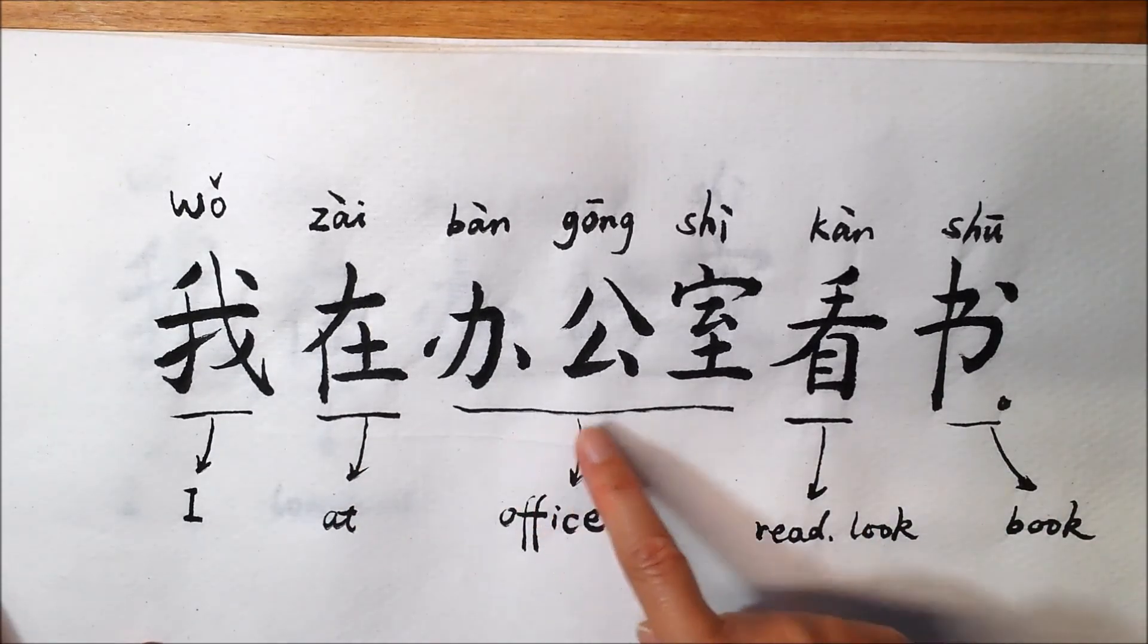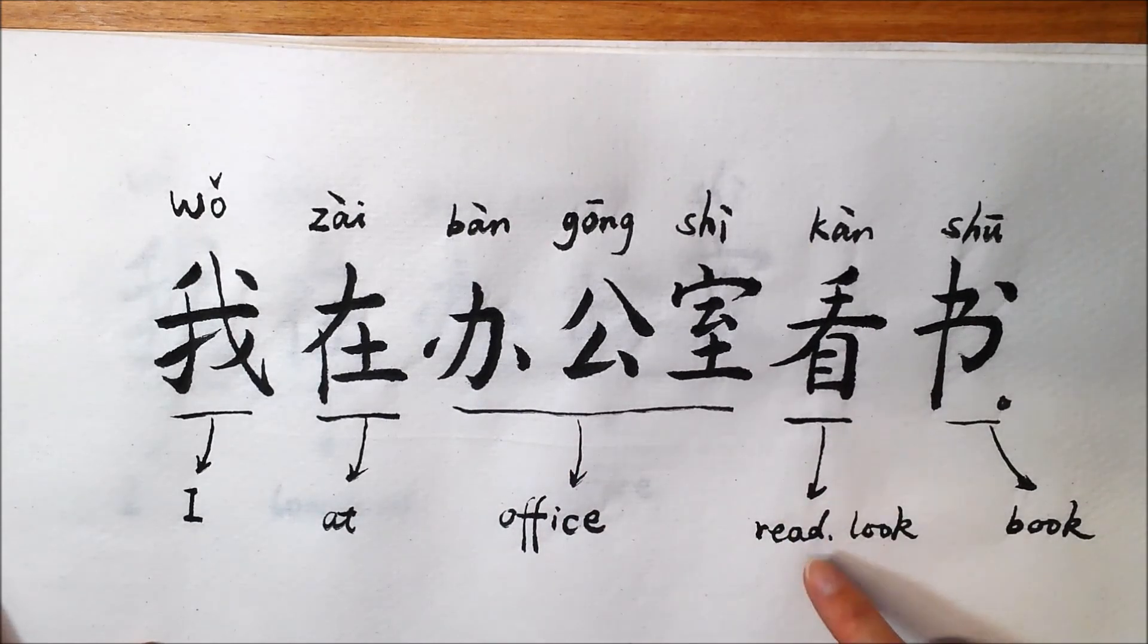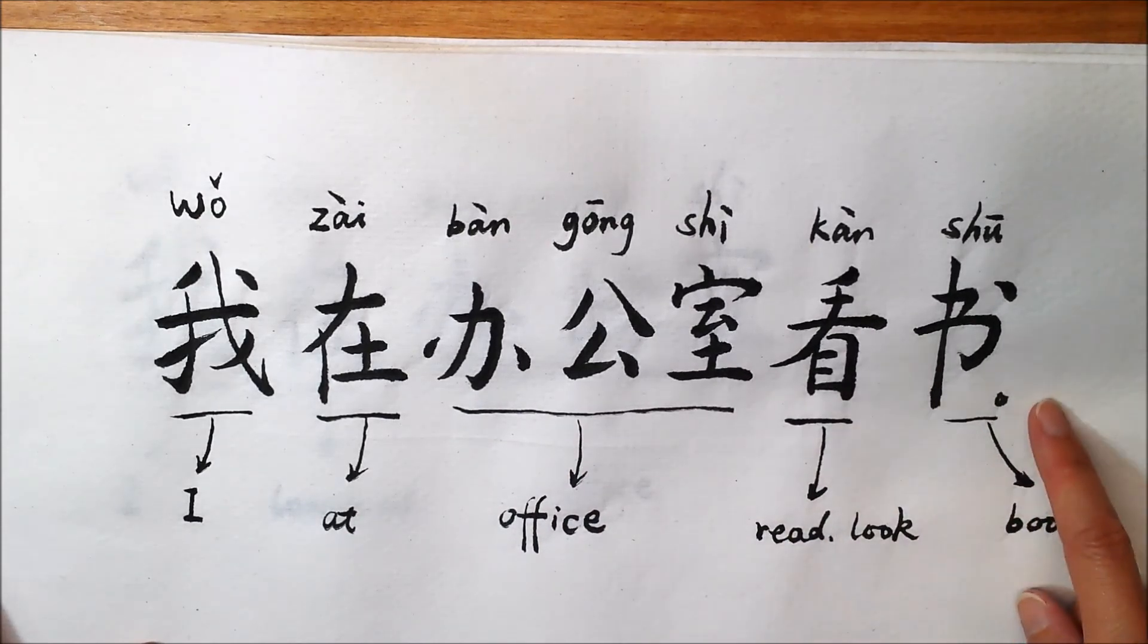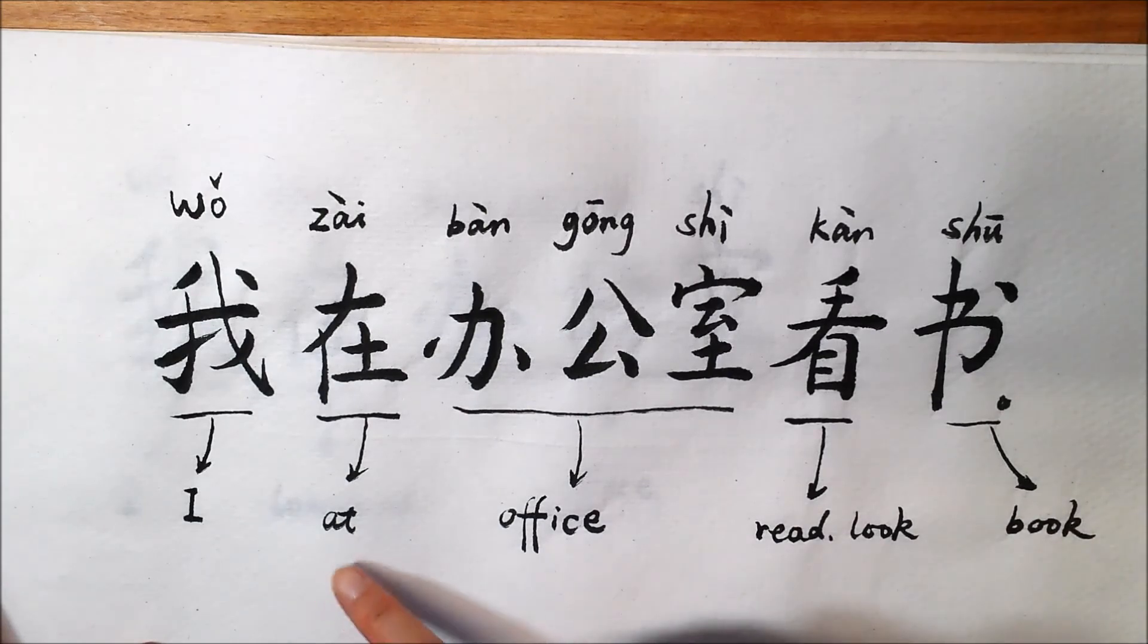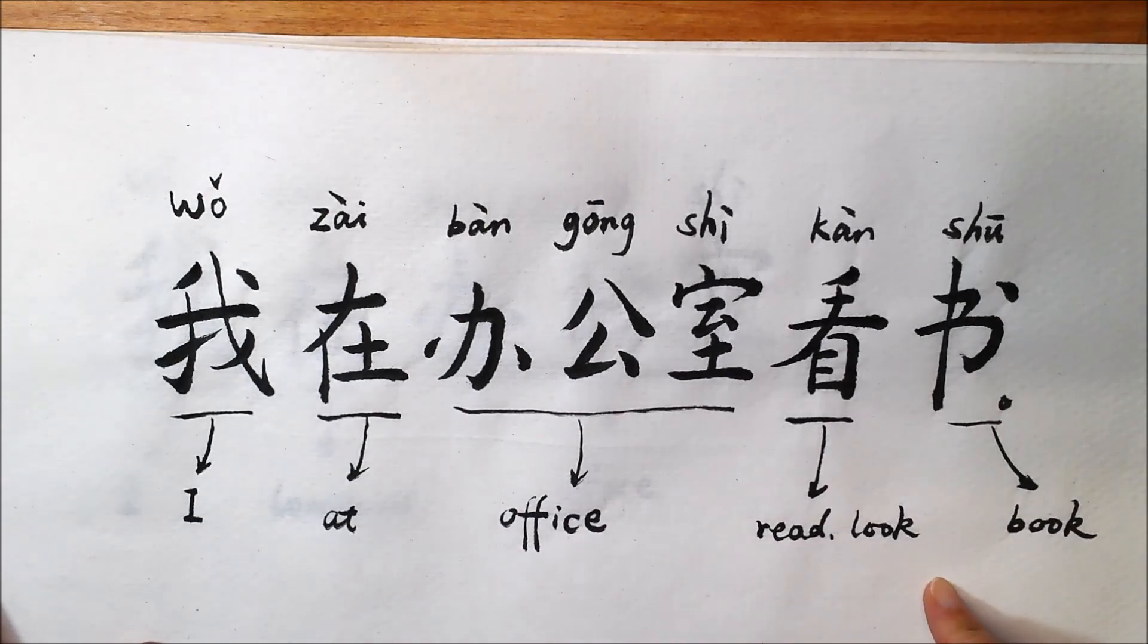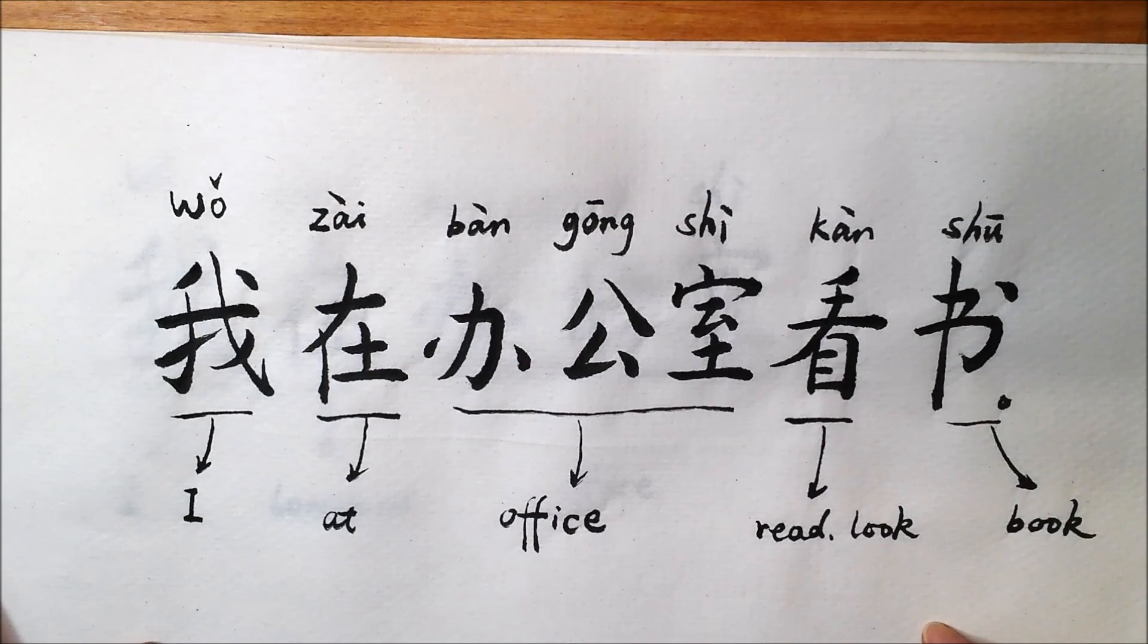我, I. 在, at. 办公室, office. 看, read or look. 书, book. 我在办公室看书. I read a book at an office.